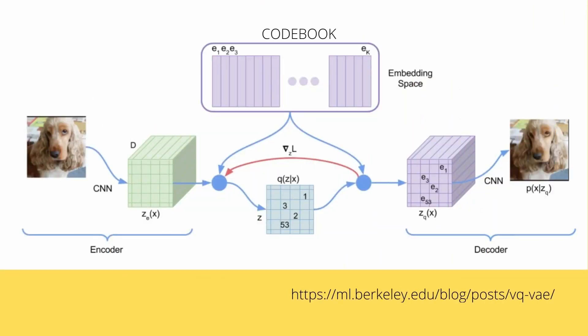Here is the original paper visualization. It shows our embedding space, our latent space, our hidden representation learning space — whatever you like to call it. You can see we have discrete subspace elements called vectors e1, e2, e3. We have a codebook. We no longer have a continuous topological space, but discrete space vectors.